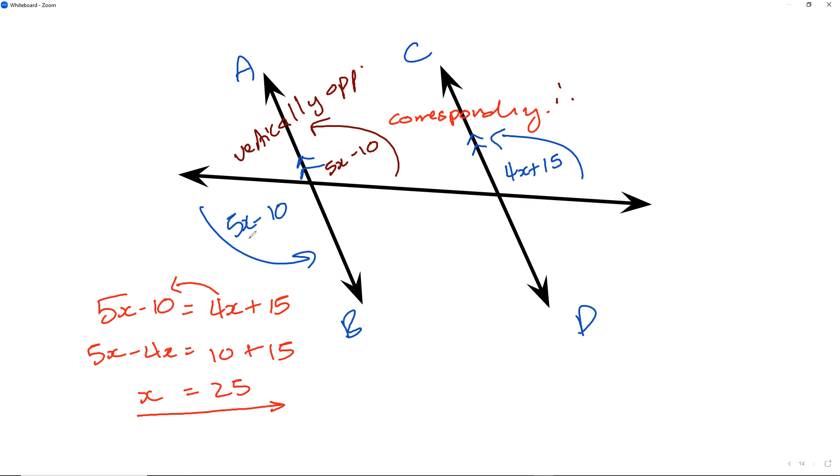Now if I substitute it in here, it should work out. If I make this 25, 25 times 5 is 125 minus 10 is 115, so this is 115 degrees. If I put 25 in here, I get 100 plus 15, which is also 115 degrees, so therefore my answer is correct.